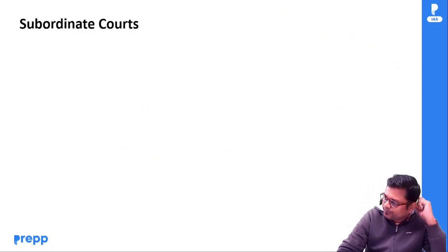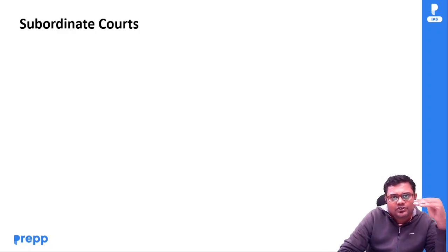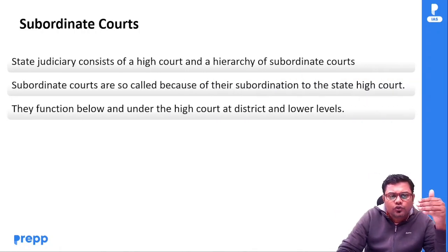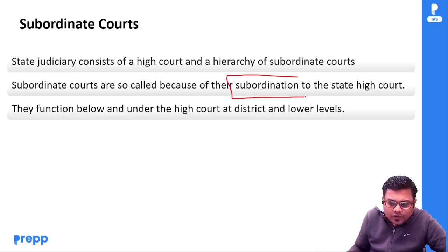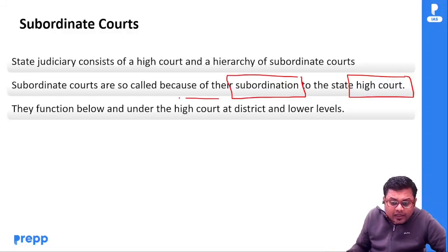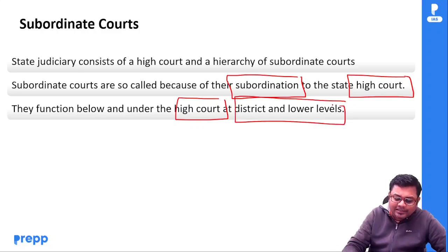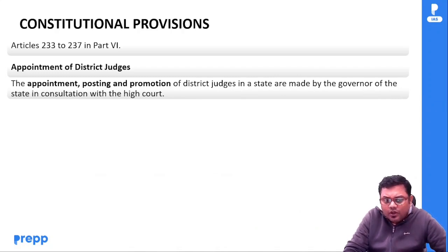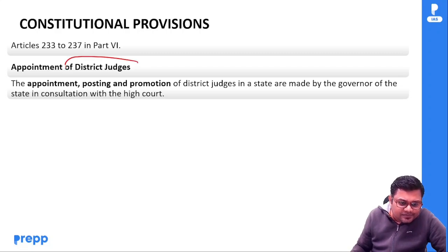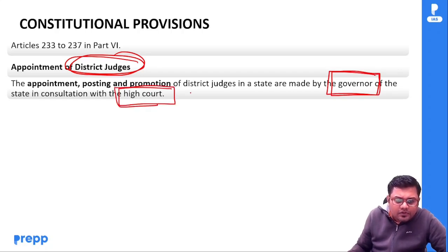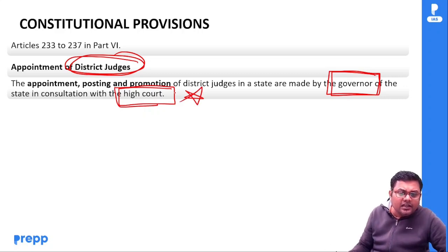Subordinate Courts — within a state, सबसे top में High Court है, उसके नीचे subordinate courts होते हैं। इनको subordinate courts इसलिए कहा जाता है because of their subordination to the state High Court — they function below and under the High Court, at district level and lower levels। Part 6, Article 233 to 237 देखने चाहिए। Appointment of district judges — Governor करेंगे in consultation with High Court। District judge का appointment, posting, promotion — Governor करता है in consultation with High Court।